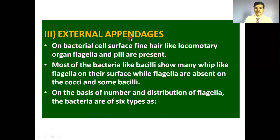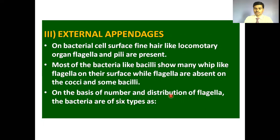External appendages on the bacterial cell surface include fine hair-like or whip-like locomotory organs called flagella, and hair-like organs called pili or fimbriae. Most bacteria like bacilli show many whip-like flagella on their surface, while flagella are absent on cocci — the round-shaped bacteria. On the basis of the number and distribution of flagella, bacteria are classified into six types.